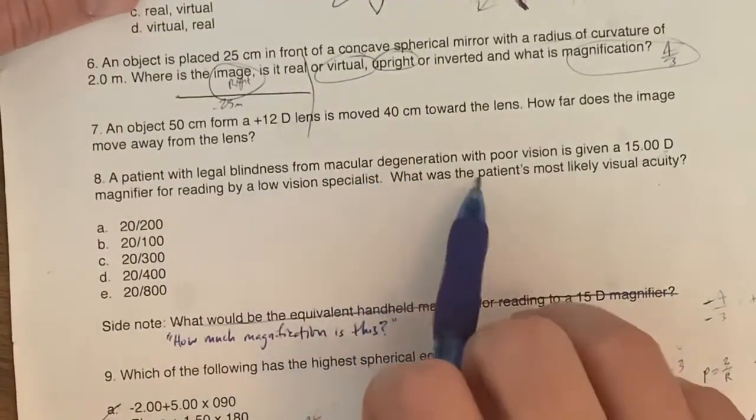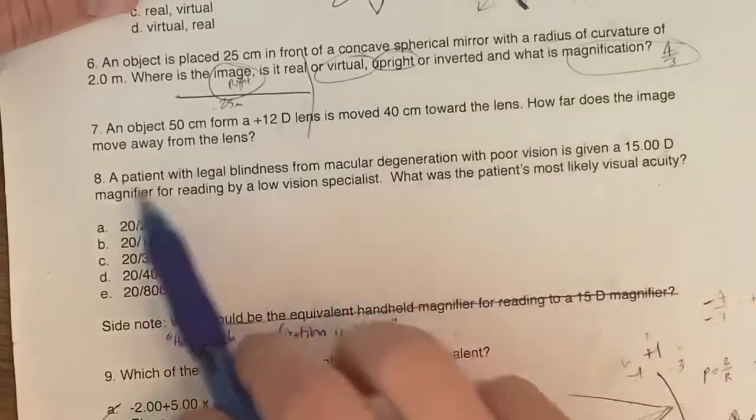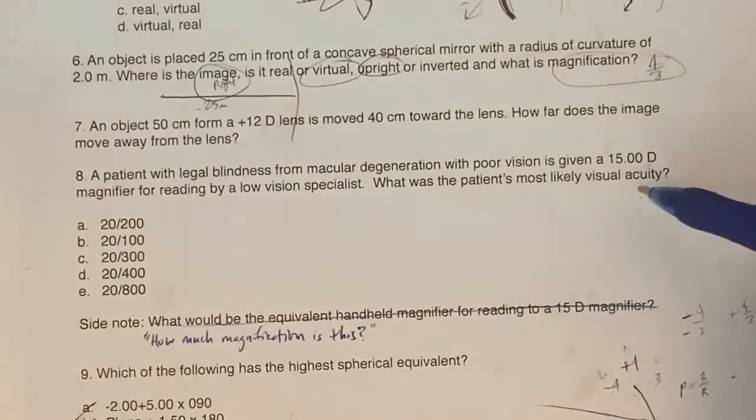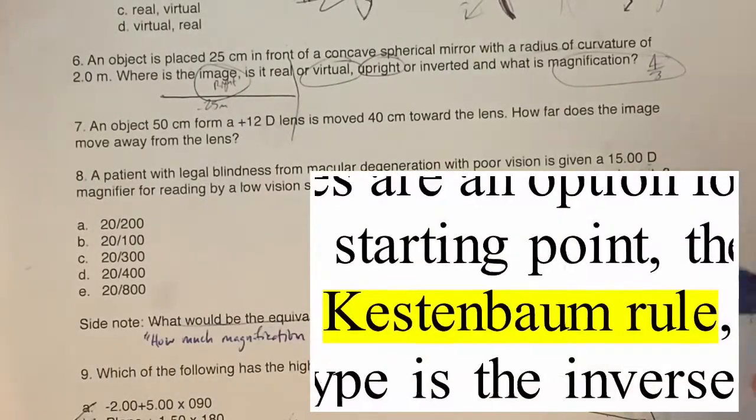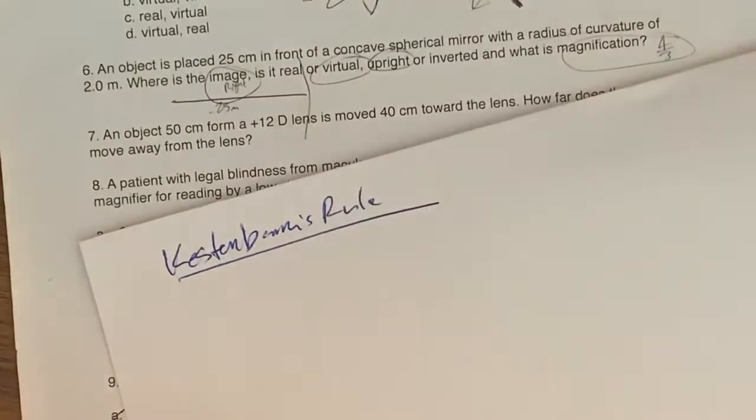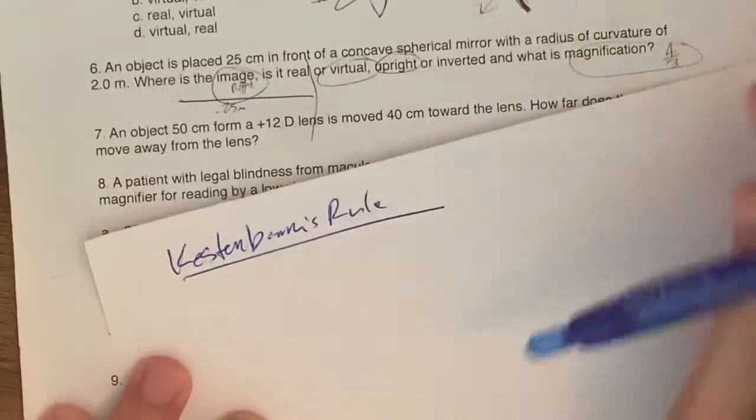Number eight, a patient with legal blindness from macular degeneration with poor vision is given a 15 diopter magnifier for reading by a low vision specialist. What's the patient's most likely visual acuity? This is just testing your knowledge of Kestenbaum's rule.